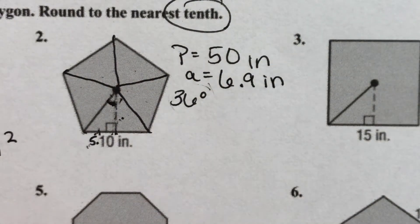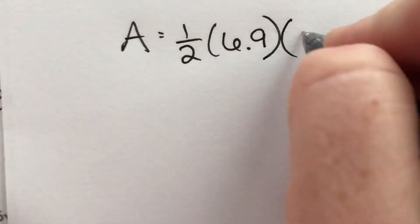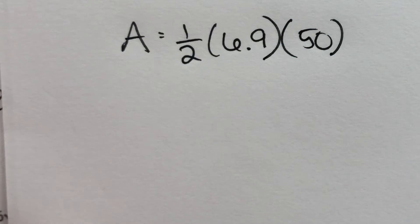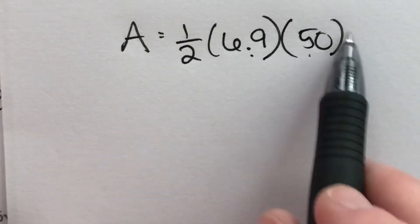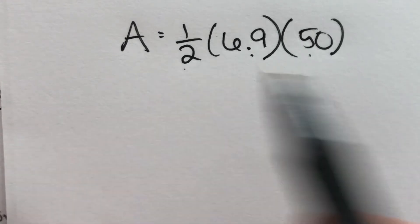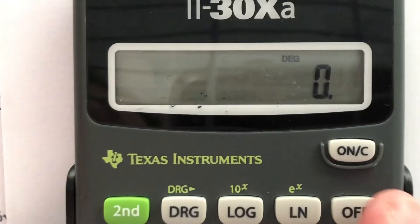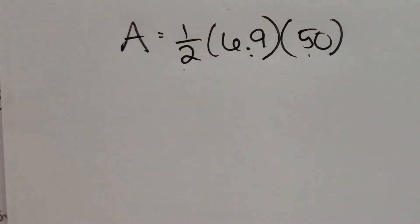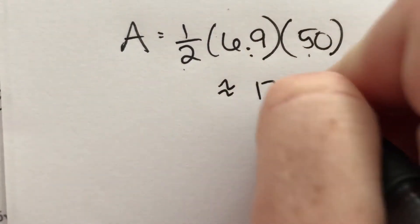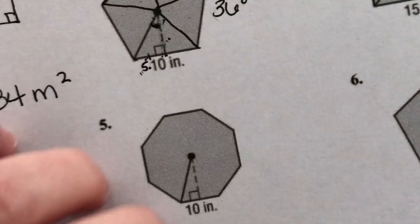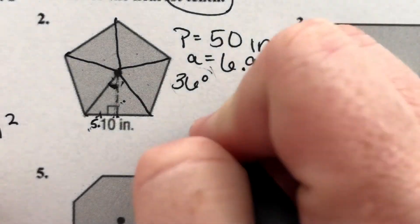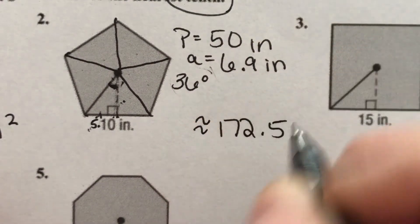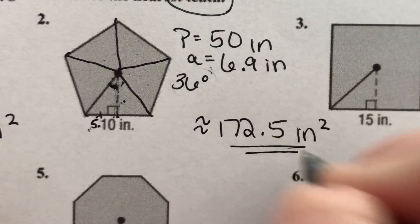Once I know the apothem, I find the area: area equals one-half times the apothem times the perimeter, which is 50. In the calculator: 6.9 times 50 divided by 2 gives 172.5. About 172.5 square inches.